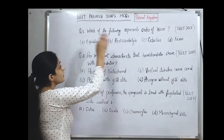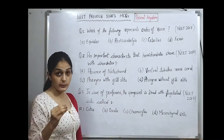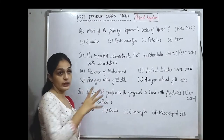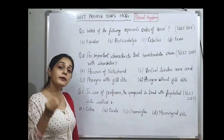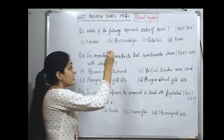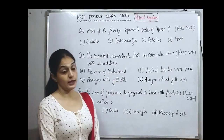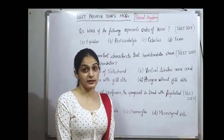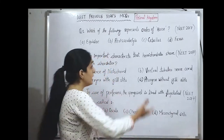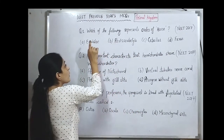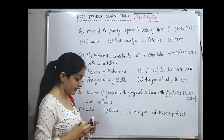The first question is: which of the following represents the order of horse? We are asked to find the order of horse. Even if we don't remember the full classification, we know that horse belongs to class Mammalia and phylum Chordata. The scientific name of horse is Equus. Since Equus is the scientific name, the correct option is Equus.